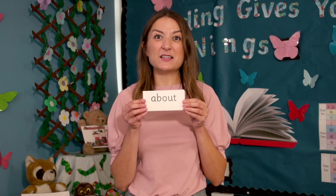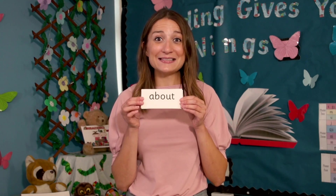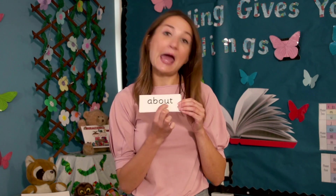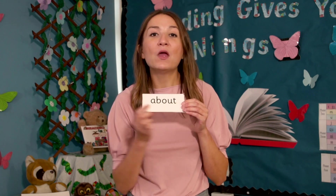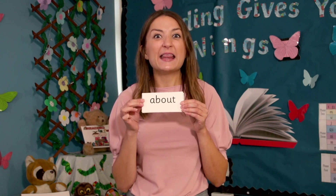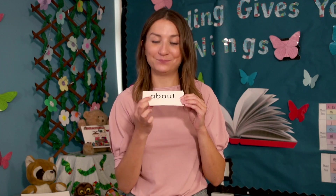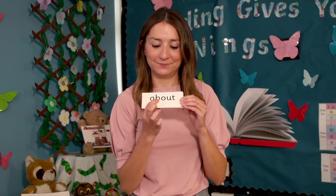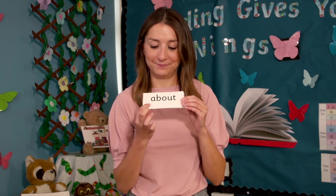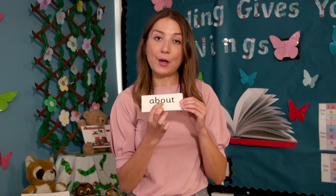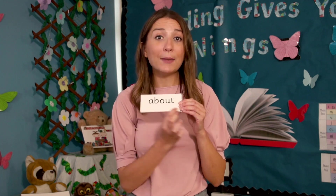Now let's read some words with graphemes we already know. Can you spot the digraph? Yes, the digraph is ow. Read each sound as I point, then blend and read the word. A, b, out — about.